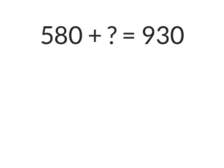This number bond question is a little bit harder. It's one of my change unknown questions where I'm missing the middle value. So I want to know 500 plus how much more will get me to 930. I'm going to start with my 580 and I'm going to add on 20 to that so that I get to 600. That's going to make it a bit easier. So 580 plus 20 will get me to the 600.